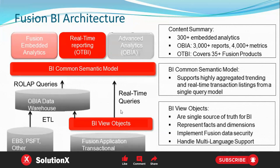If you want to perform more complex logic on specific columns or if a business requirement is not achievable in OTBI, you should use a BIP report. In summary, OTBI provides complete real-time querying. Oracle provides 300+ embedded analytics, 300+ reports, 4000+ metrics, and OTBI covers 35+ Fusion products. Day by day, Oracle is enhancing these features, and OTBI supports highly aggregated, trending, and real-time transaction listings from a single query model.